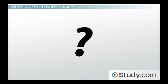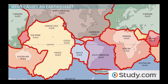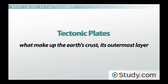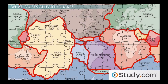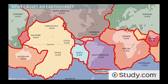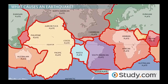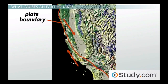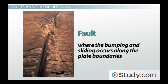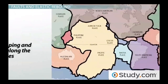Earthquakes happen deep underground along tectonic plate boundaries. Tectonic plates make up the earth's crust and fit together like puzzle pieces, but they're always moving because the part of the earth underneath is like a fluid — the plates float on top like ice on a pond. As they move, they create tension and pressure as they slide past and bump into each other, sometimes sticking together. Though the plate boundary is stuck, the plate itself keeps moving. Eventually the pulling becomes too much and the plates suddenly break free, causing an earthquake. The place where the bumping and sliding occurs along plate boundaries is called a fault.